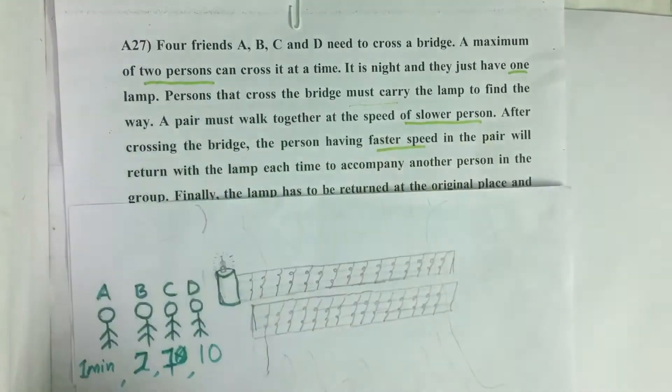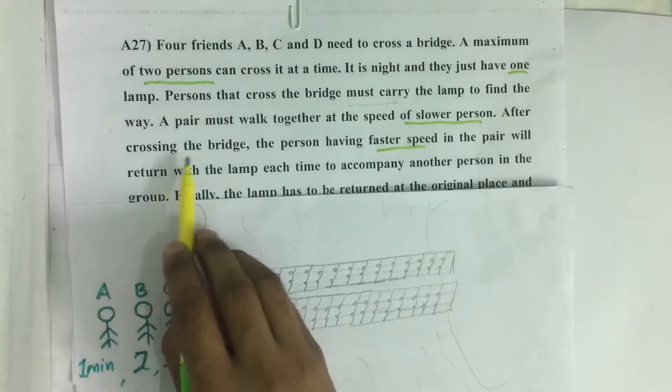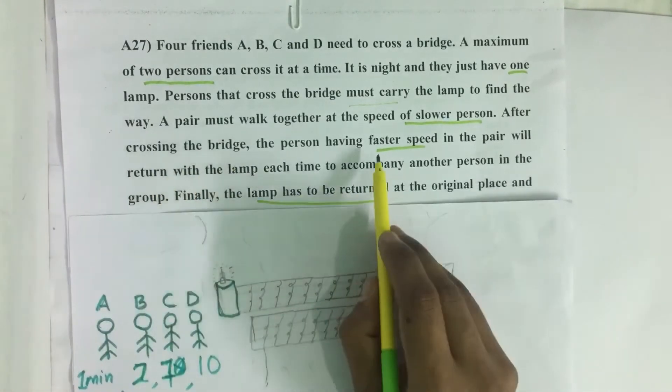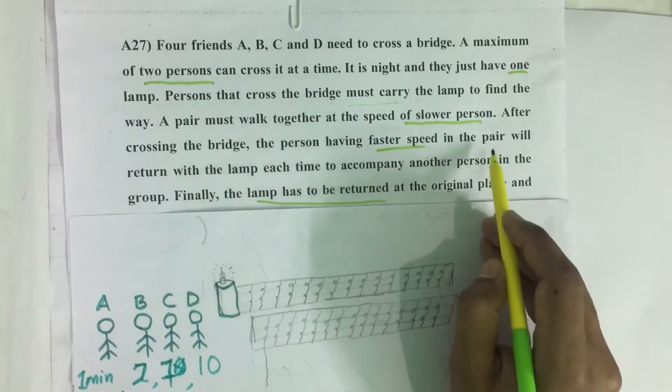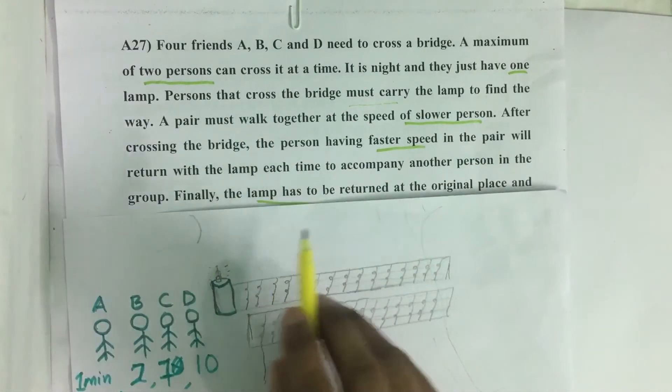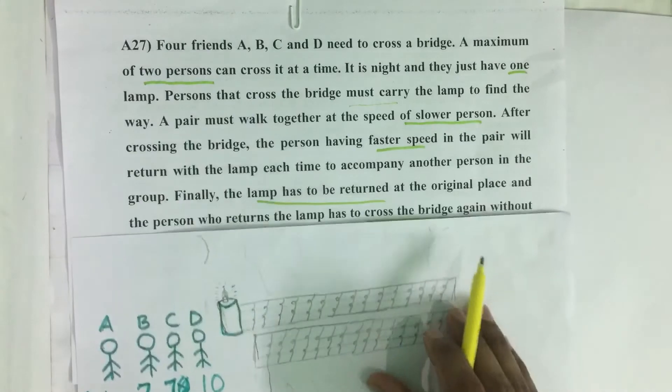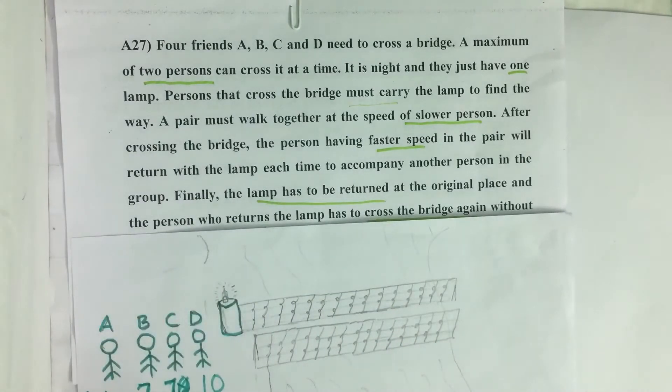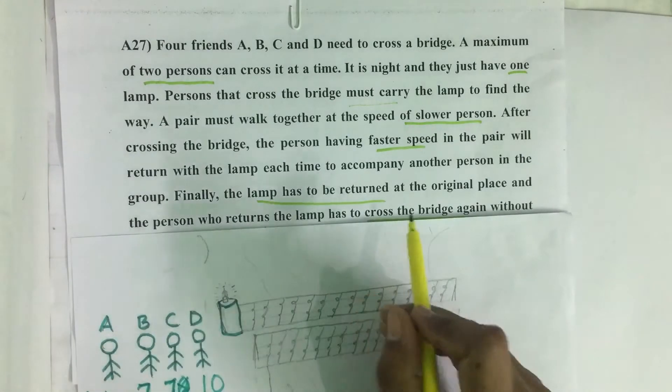After crossing the bridge, the person having faster speed in the pair will return with the lamp each time to accompany another person in the group.